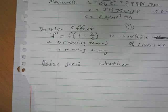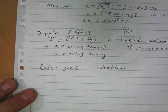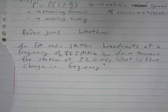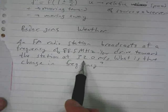So just to do an example calculation, let's say we have an FM radio station broadcasting at a frequency of 88.5 megahertz. You drive toward the station at 32 meters per second. What is the change in frequency?